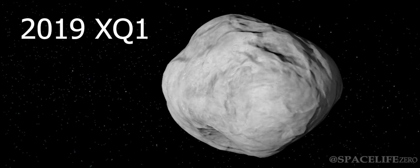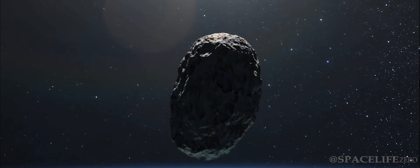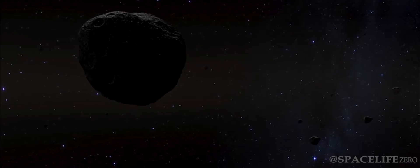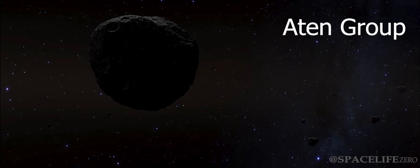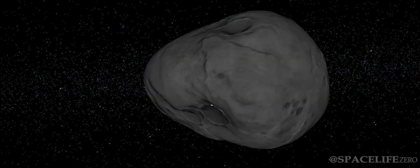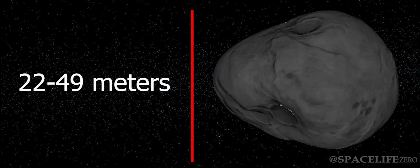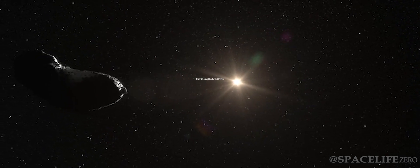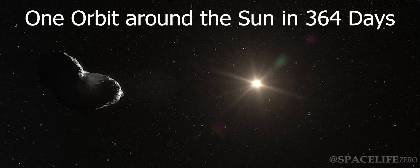Asteroid 2019 XQ1 was discovered on December 4, 2019, and it belongs to the Aden Group. Its size is estimated in the range from 22 meters to 49 meters. It takes 364 days to complete one orbit around the Sun.